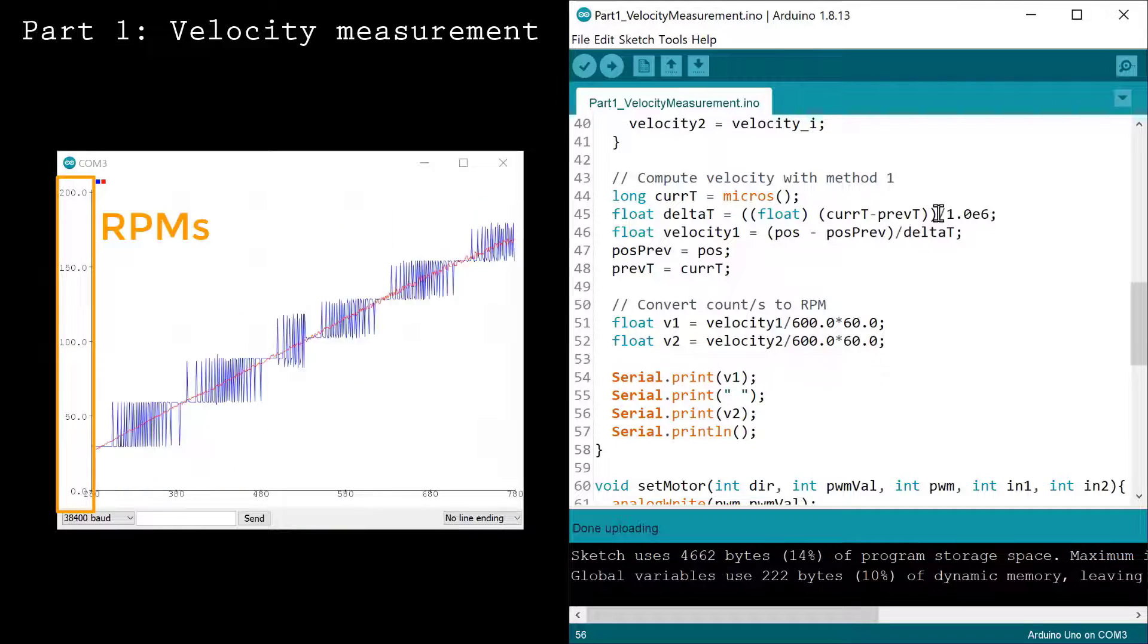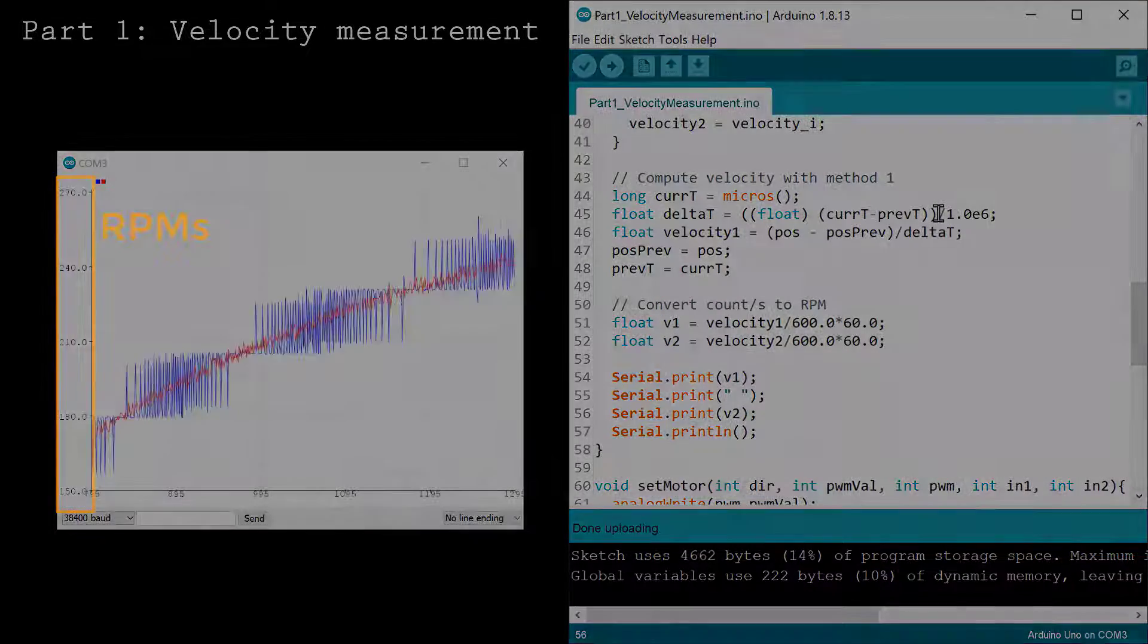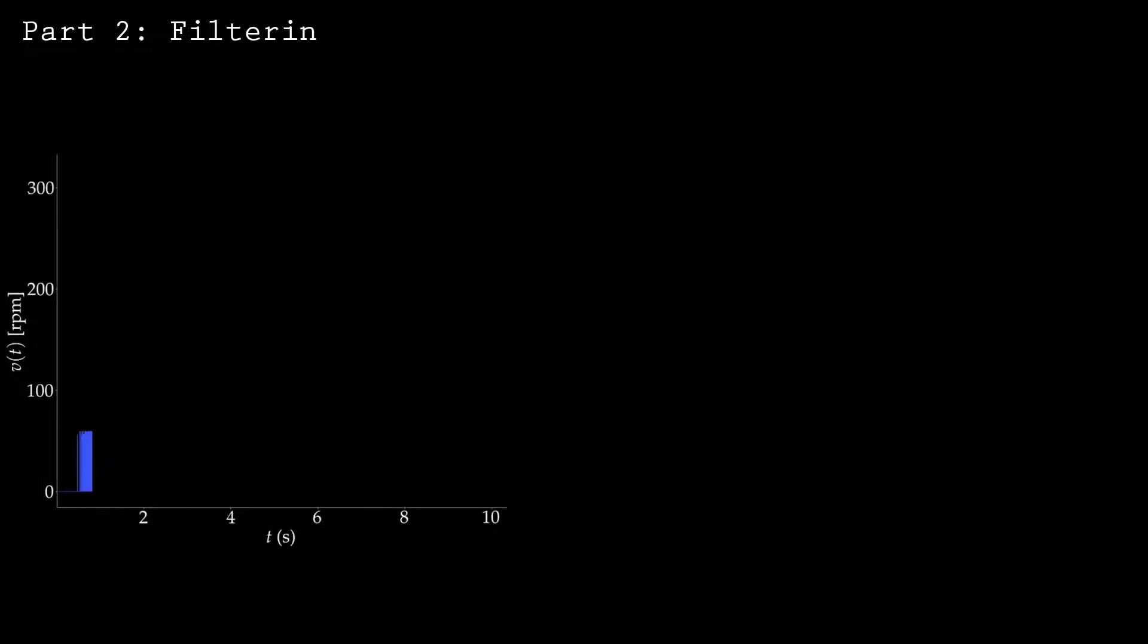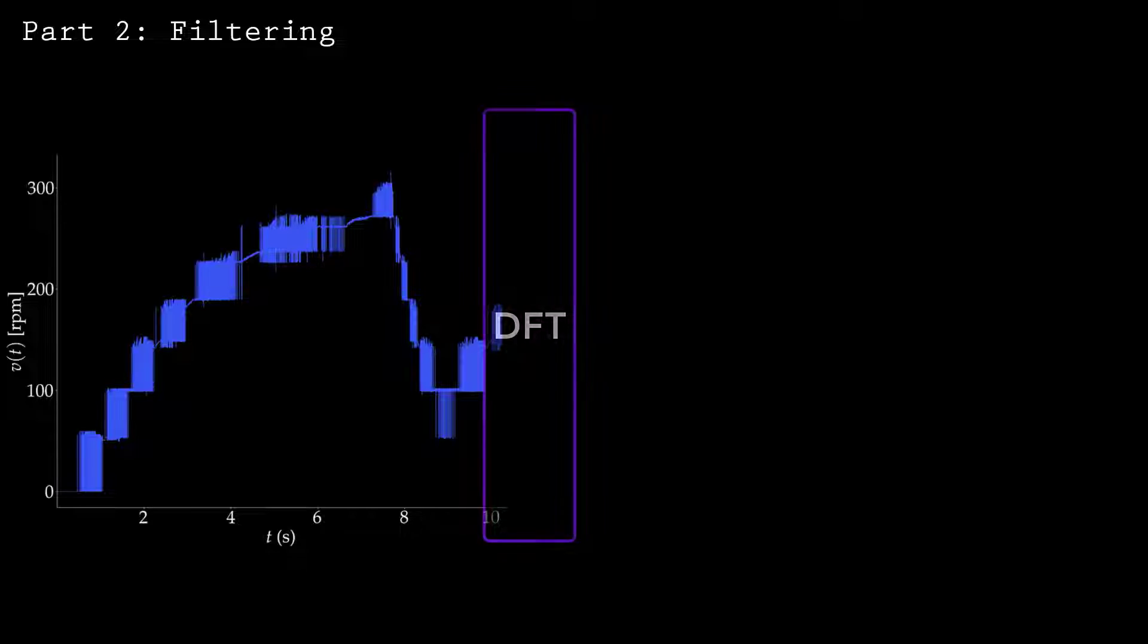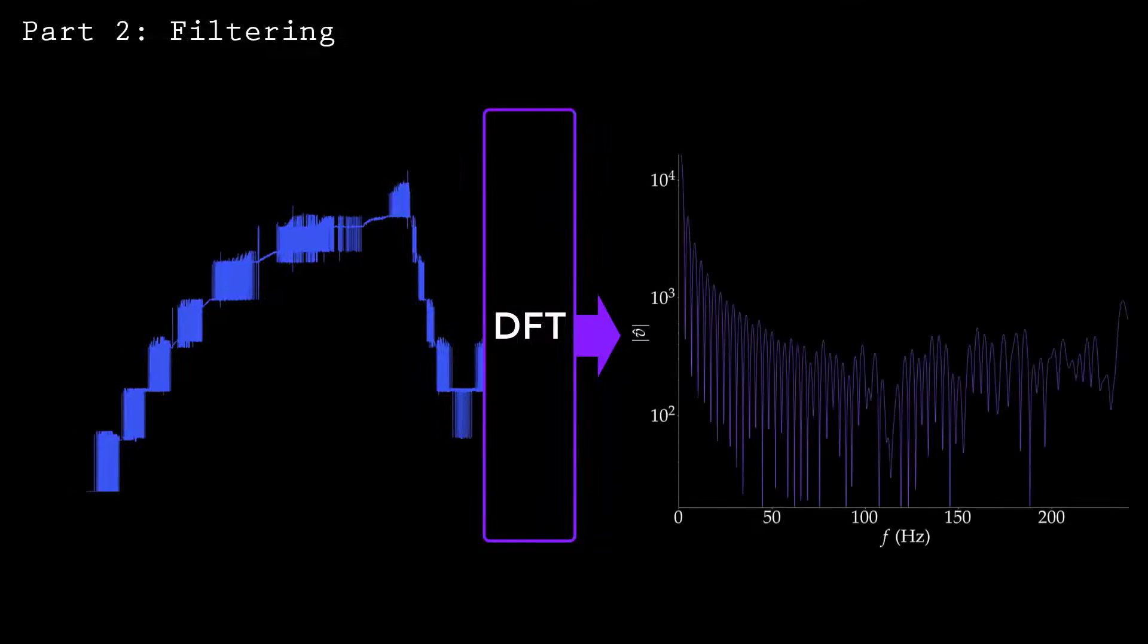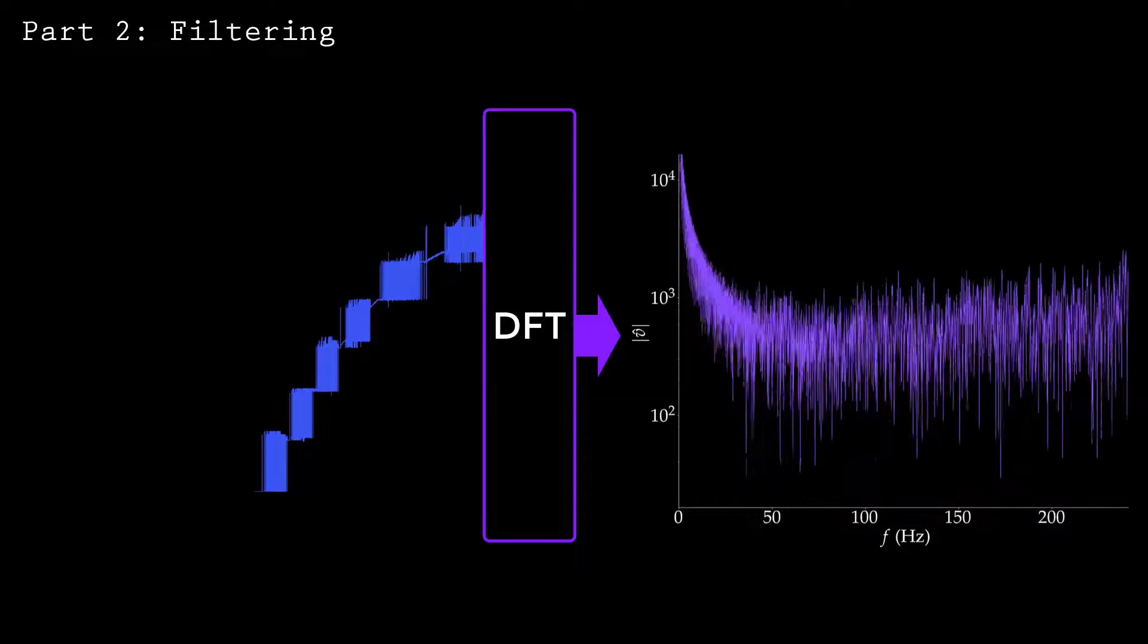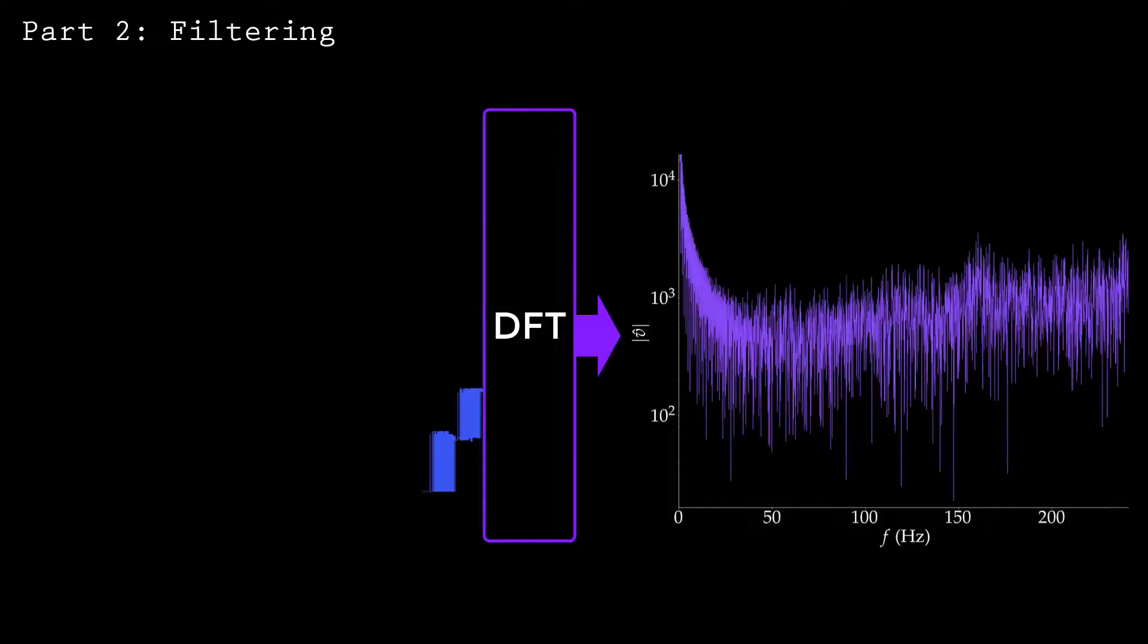The result is the speed in RPMs. When I run the code, the velocity is now measured in RPMs. The speed computed by method 1 appears coarse due to the discrete encoder steps. As the speed changes, there are high-frequency oscillations between discrete levels.